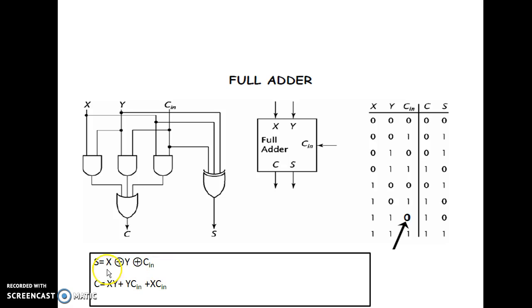First, we implement s. Now, s equals x xor y xor cin. So, you have three inputs to this xor gate: cin, x, and y. And at the output, you get the sum s.